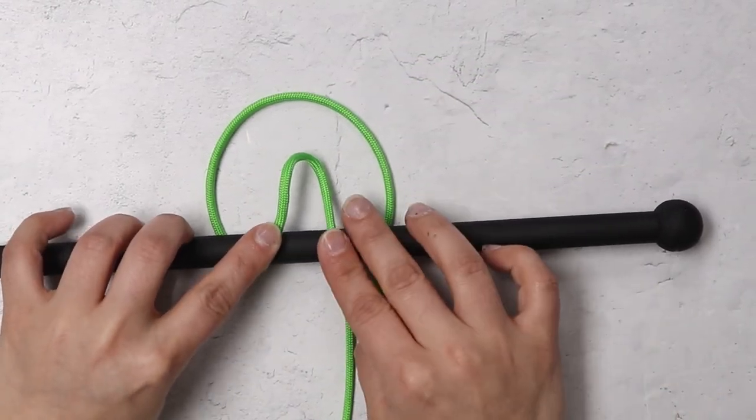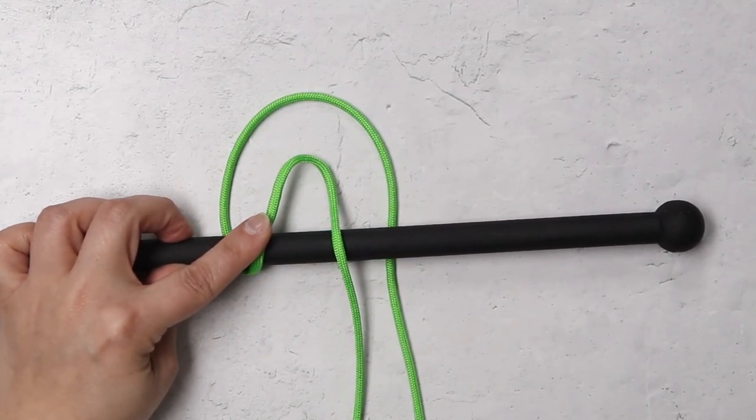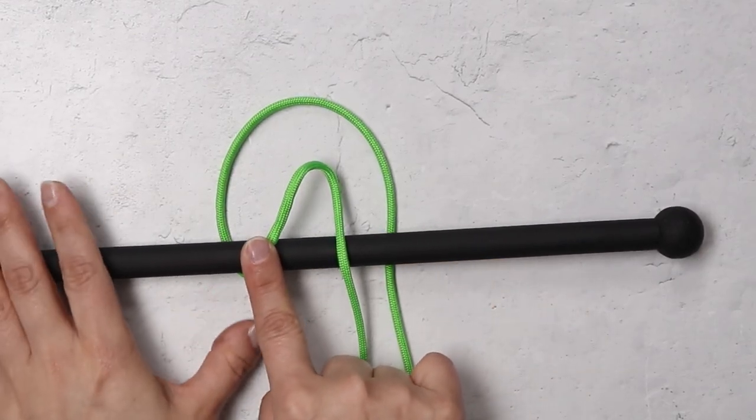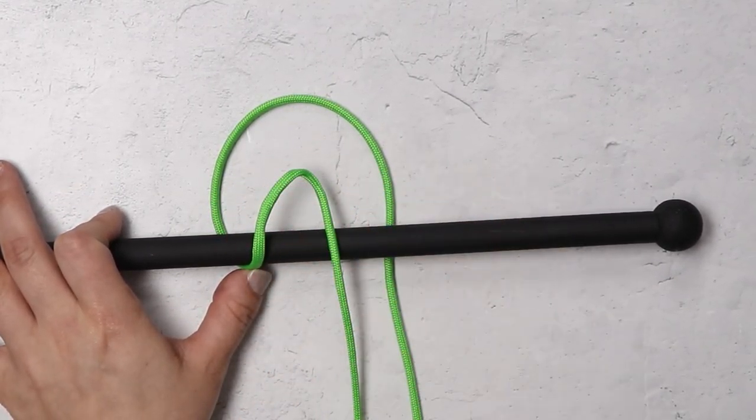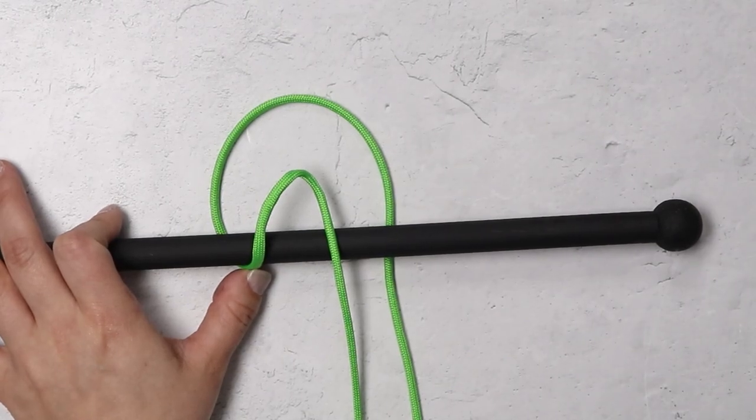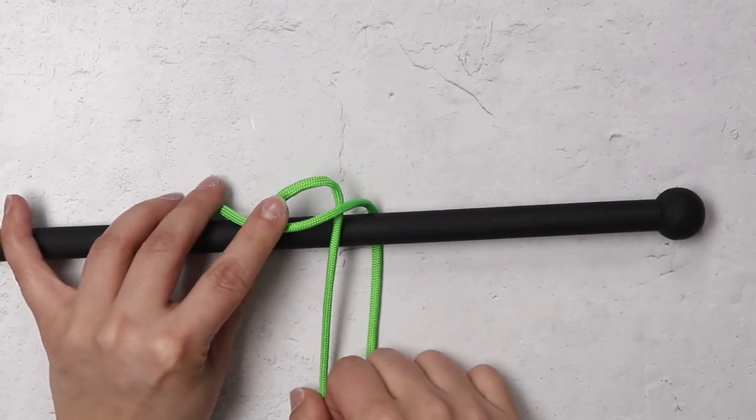The next step will be to bring that top loop over the bite that you made first. So you'll basically be laying one bite over the other, one from the back, one from the front. And then you just want to tighten that up as well so you don't have any slack.